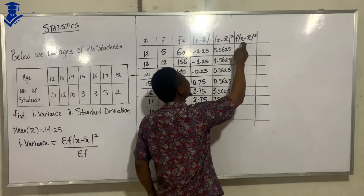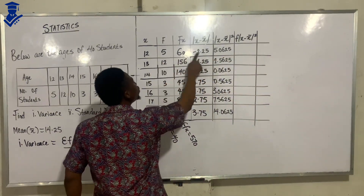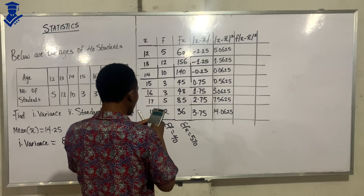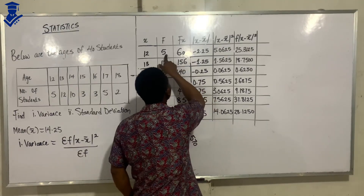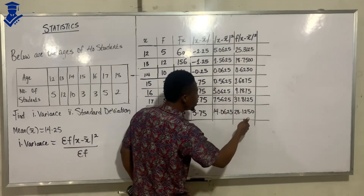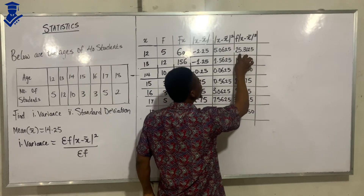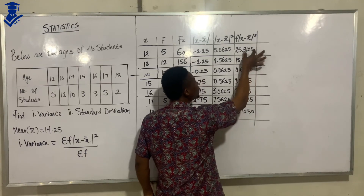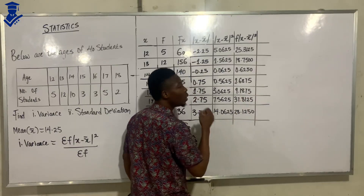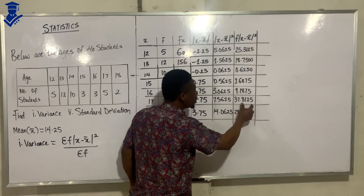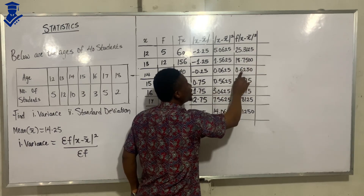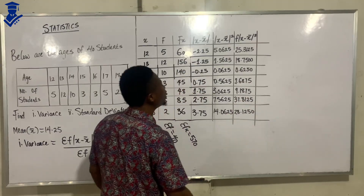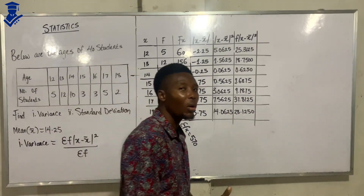Now we do f times (x minus x̄) squared — we use the frequency to multiply each squared value. The first one is 5 times 5.0625, giving 25.3125. Multiplying the others gives 18.75, and so on. Note that trailing zeros are added so all values align to 4 decimal places, which makes the table more presentable.